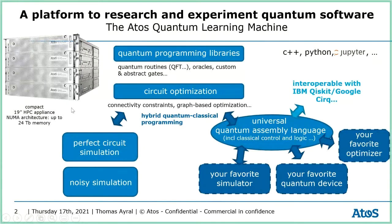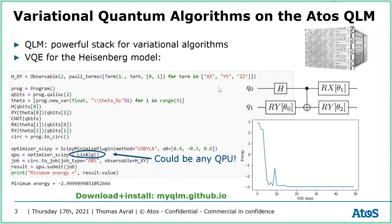Today we will not use QLM, which is a remote server accessible at Argonne. We will use MyQLM, which is the laptop version of QLM, where you can run toy circuits and play with variational quantum algorithms. What's important is that this framework is fully interoperable with IBM Qiskit, with Google Cirq, and other frameworks, in the sense that you can write programs with QLM and run them on IBM Qiskit. Conversely, you can also write programs in IBM Qiskit and then run or optimize them with our optimizer or simulators.